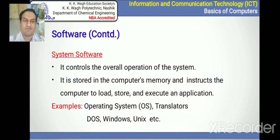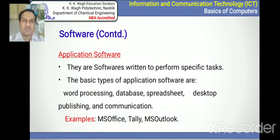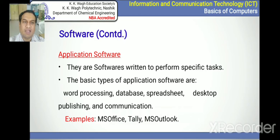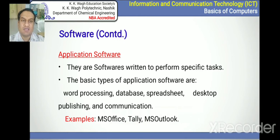Examples of system software are OS (operating system), some translators, DOS, Windows, Unix, etc. Application software is written to perform specific tasks. The basic types include word processing, database, spreadsheet, desktop publishing, and communications. Examples of application software are MS Office, Tally, and MS Outlook.